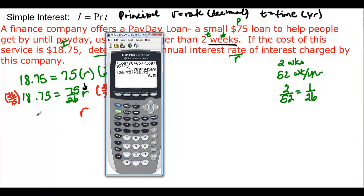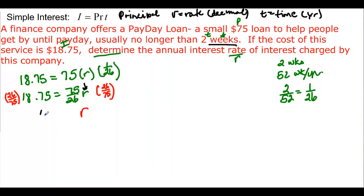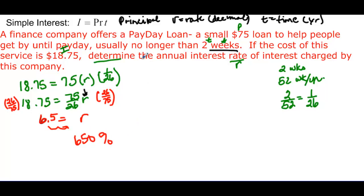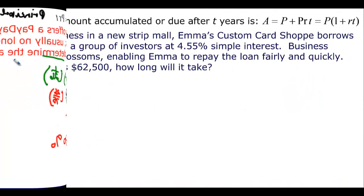We find out that the answer is 6.5. So R is 6.5, but remember we have to move the decimal two places to figure out what the percentage is. So that is actually 650%. What does that tell you about getting a payday loan?